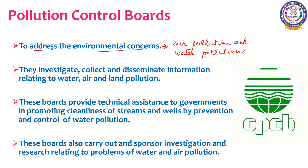Both the Central Pollution Control Board (CPCB) and the State Pollution Control Board collect and disseminate information relating to water, air, and land pollution. These boards provide technical assistance to governments in promoting cleanliness of streams and wells by prevention and control of water pollution. They also carry out and sponsor investigation and research relating to problems of water and air pollution.